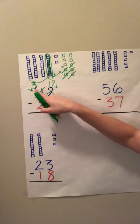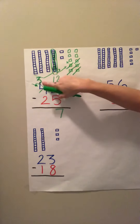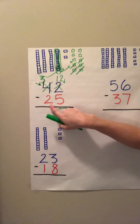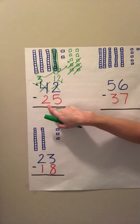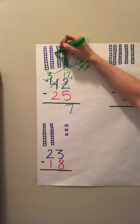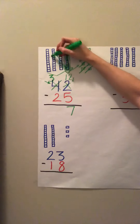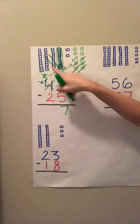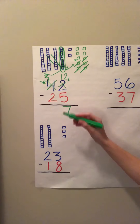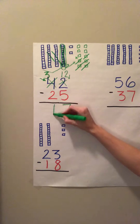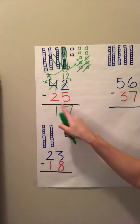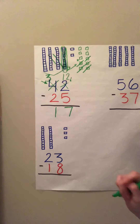Now again, we're down to our three tens. How many of those tens do we need to take away? Right, we need to take two away. So when I take two away, I'm left with how many tens? Right, one. So 42 minus 25 is 17.